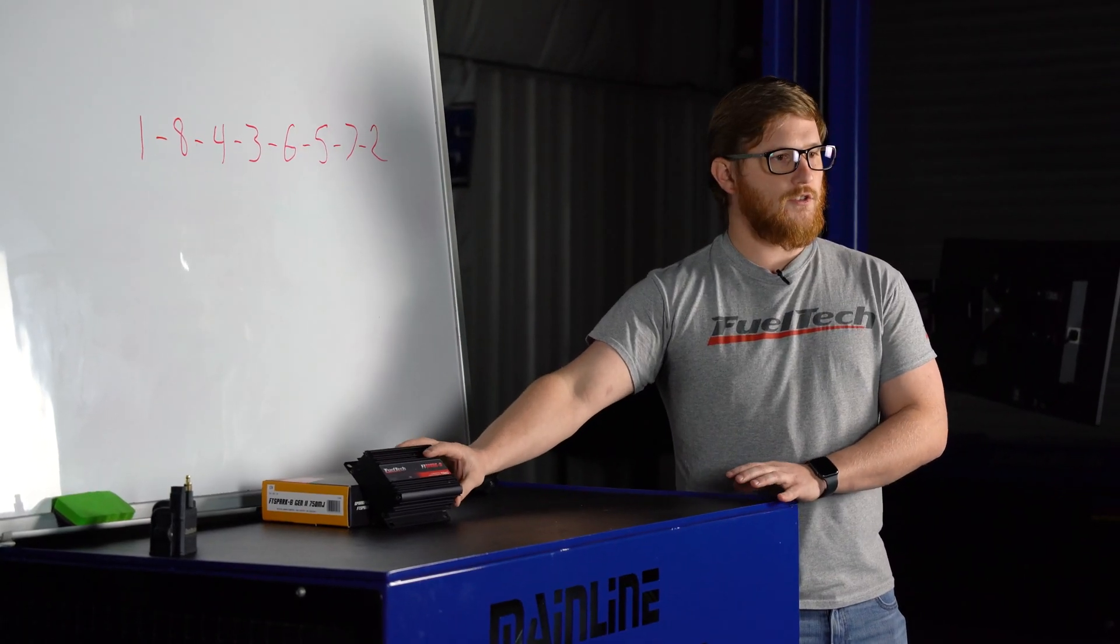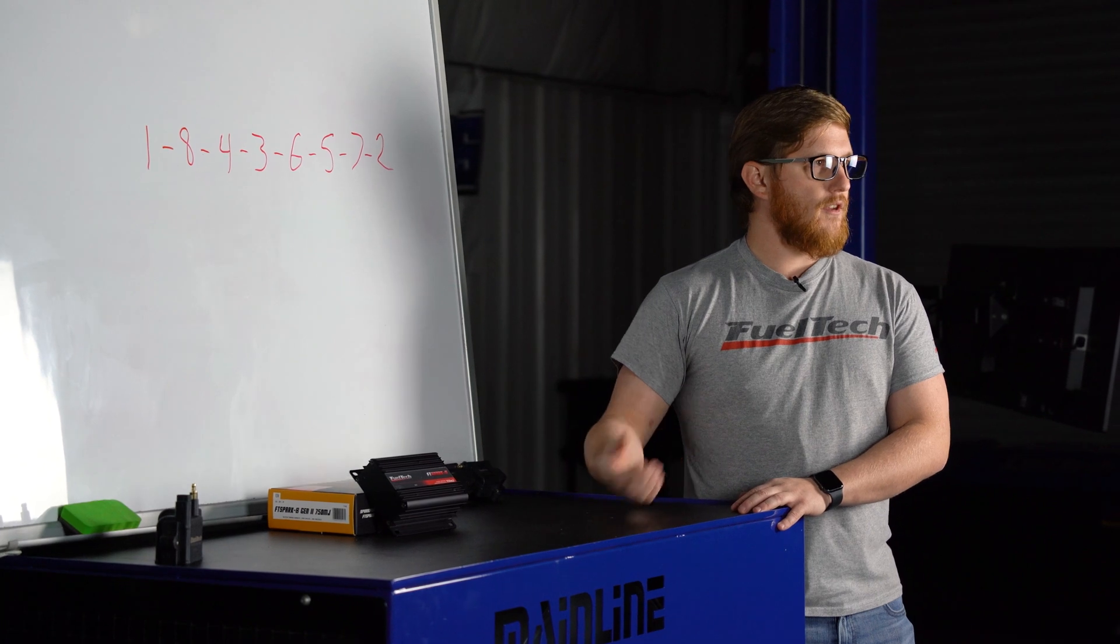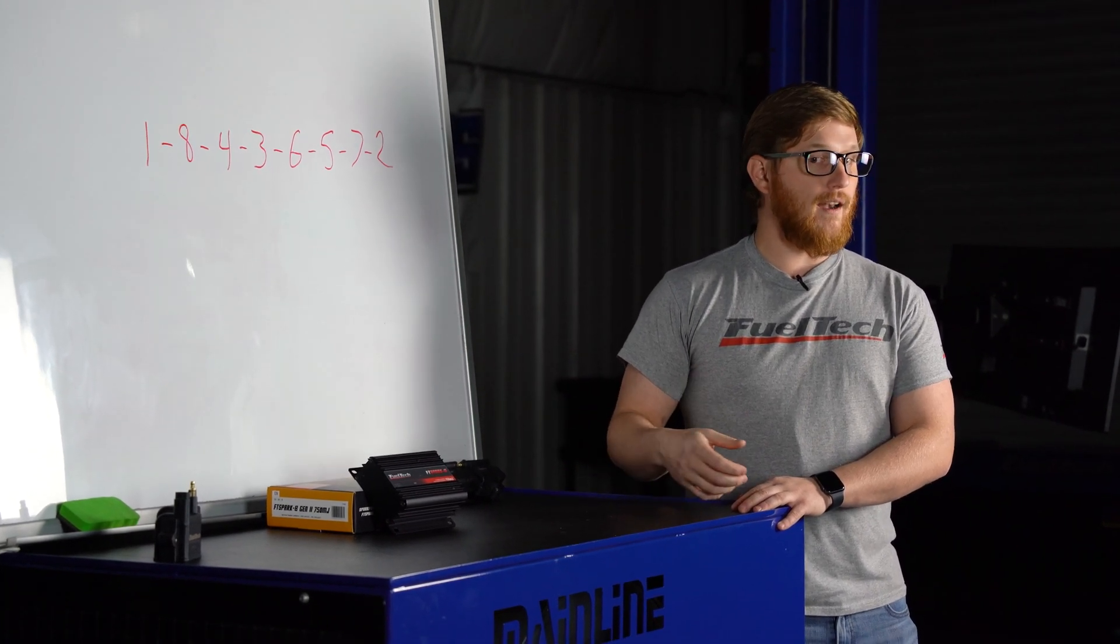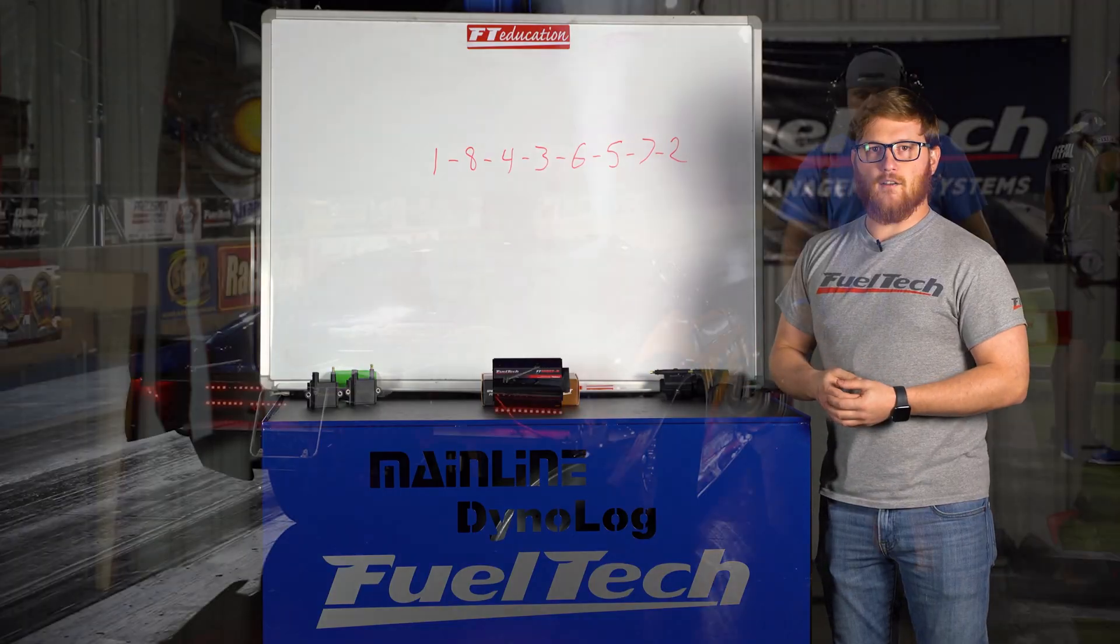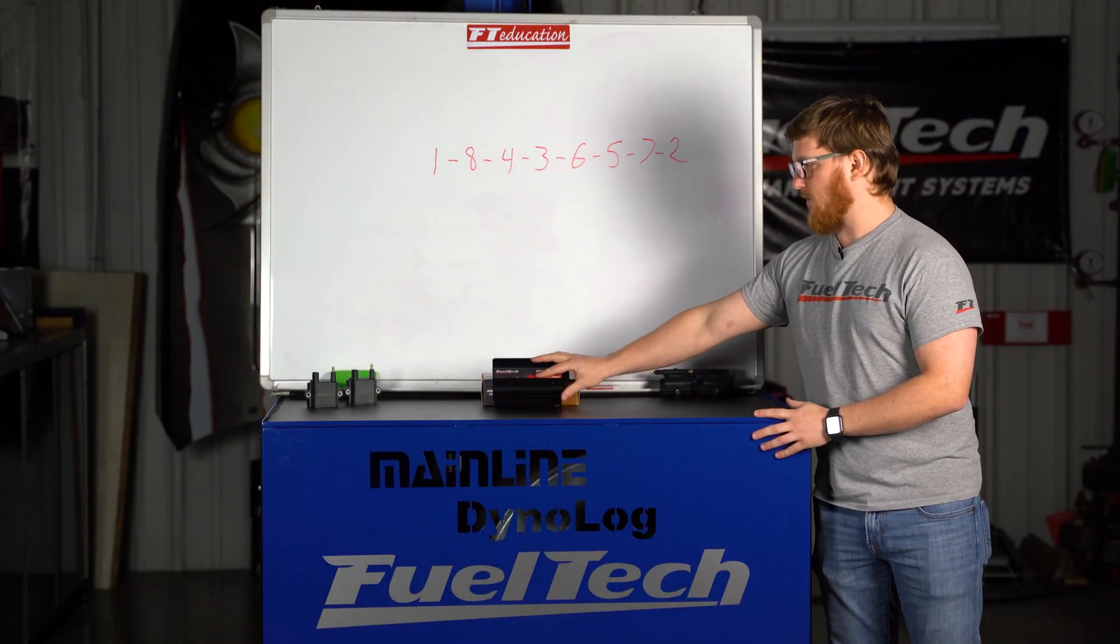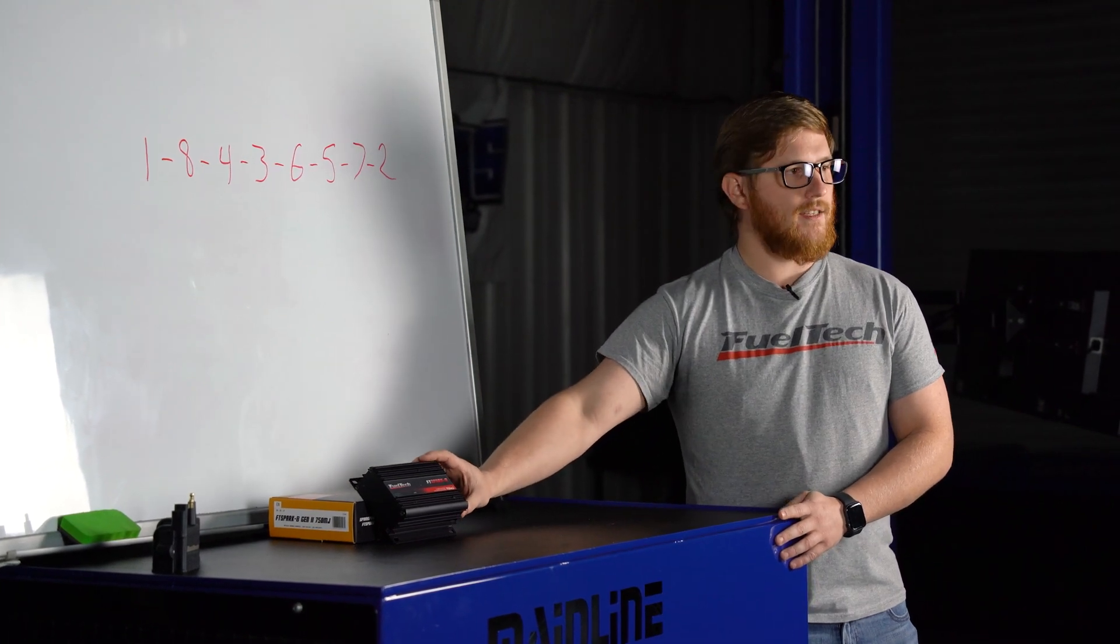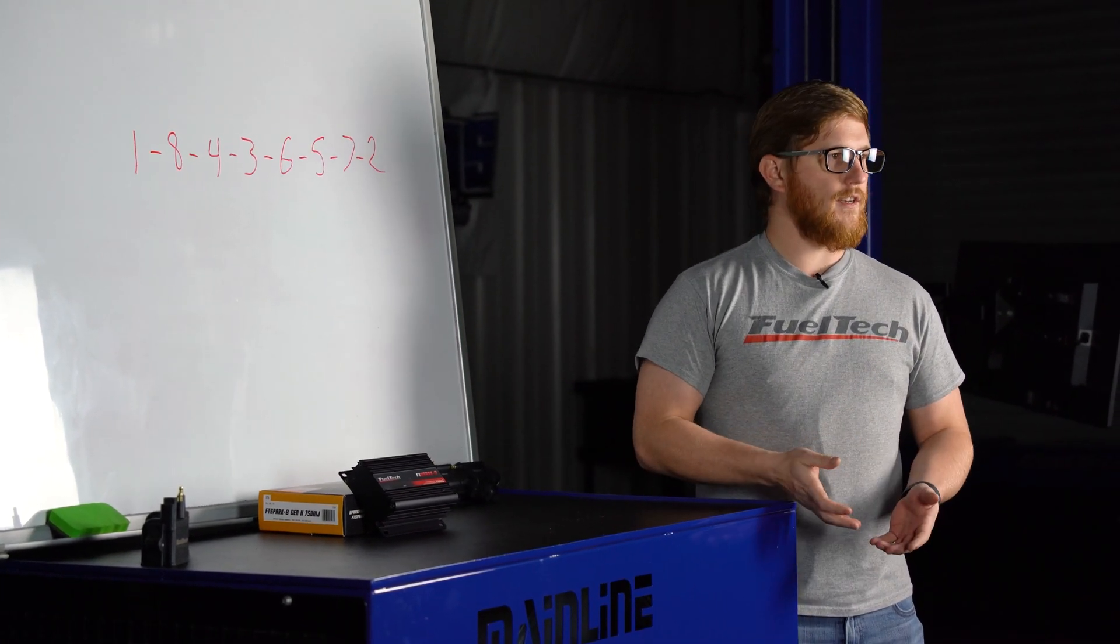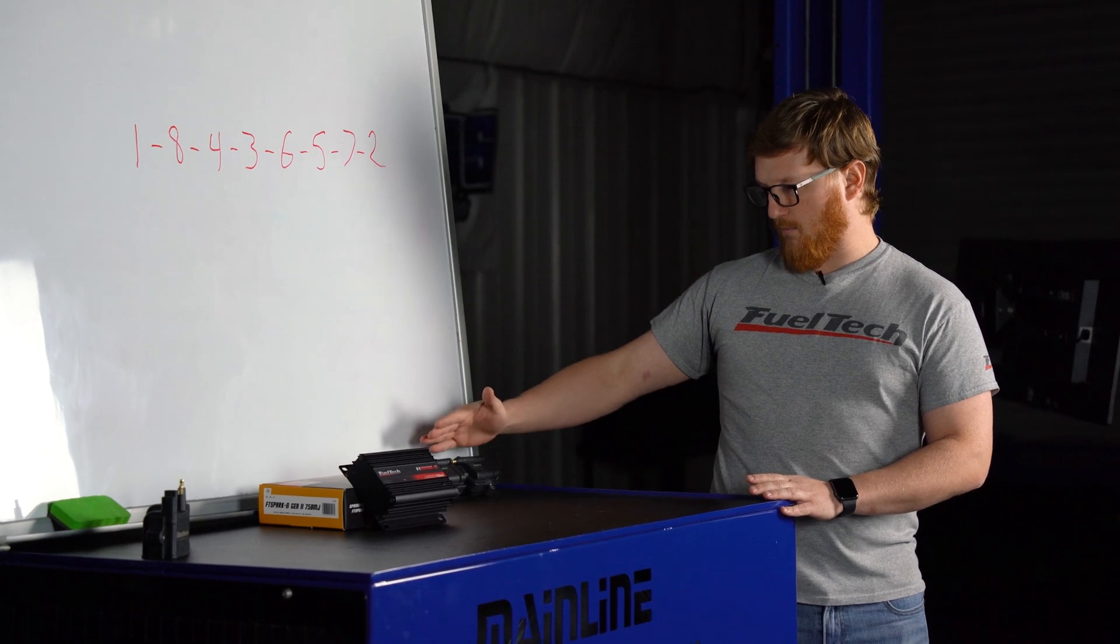Typically we would use this on an extremely high powered methanol or even sometimes nitromethane and even like our nitrous customers that are using a lot of nitrous and generating a lot of cylinder pressure using our CDI ignition system. This one, the FT spark 8, is typically done in sequential ignition. Same thing with our smart coils.